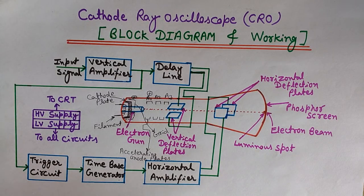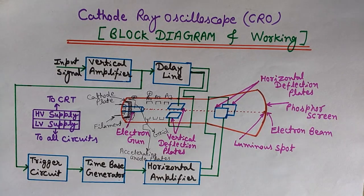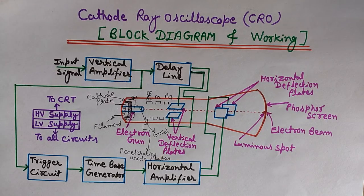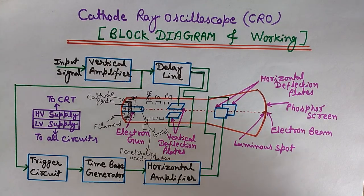So this was the basic structure and functioning of the cathode ray oscilloscope. We also discussed applications of the CRO: measurement of voltage, current, frequency, and phase, and analyzing the waveform in different ways.